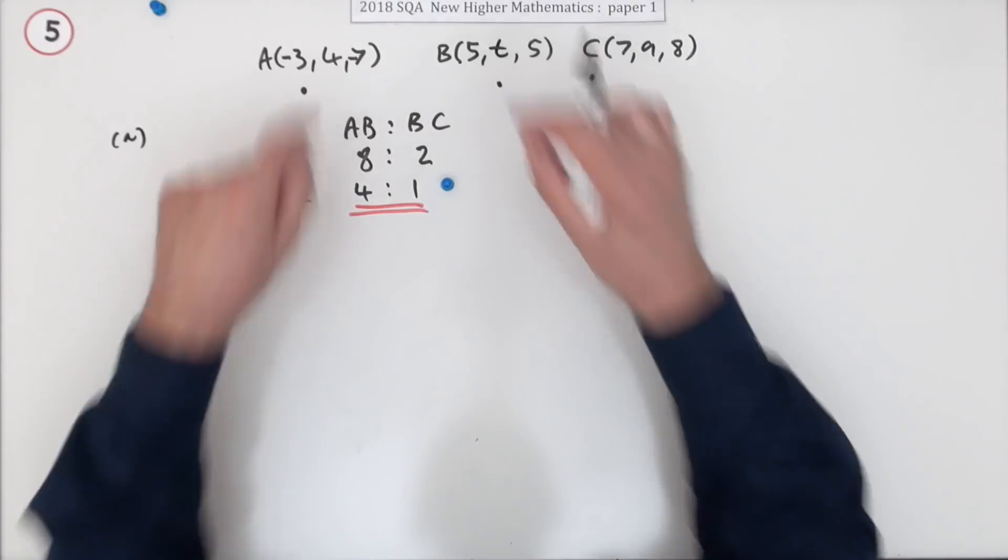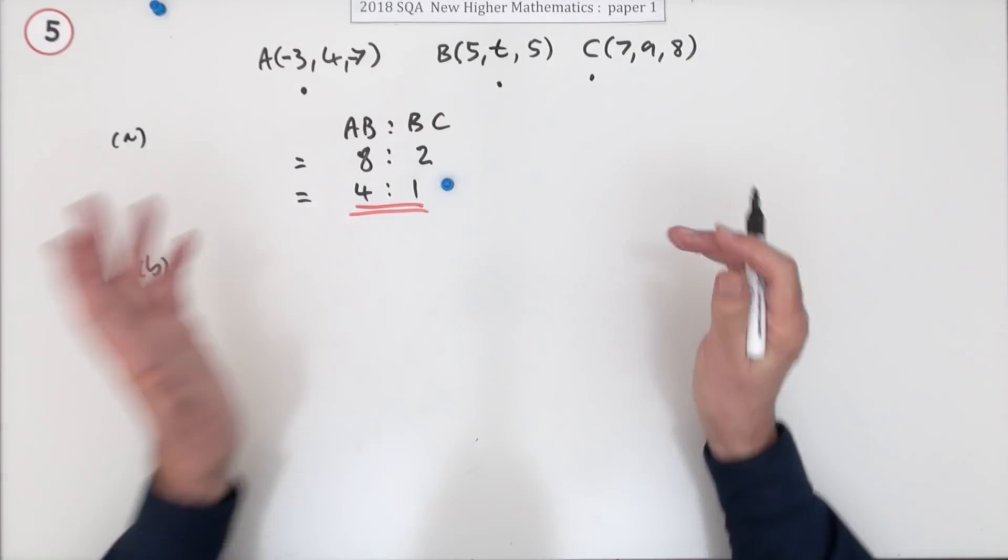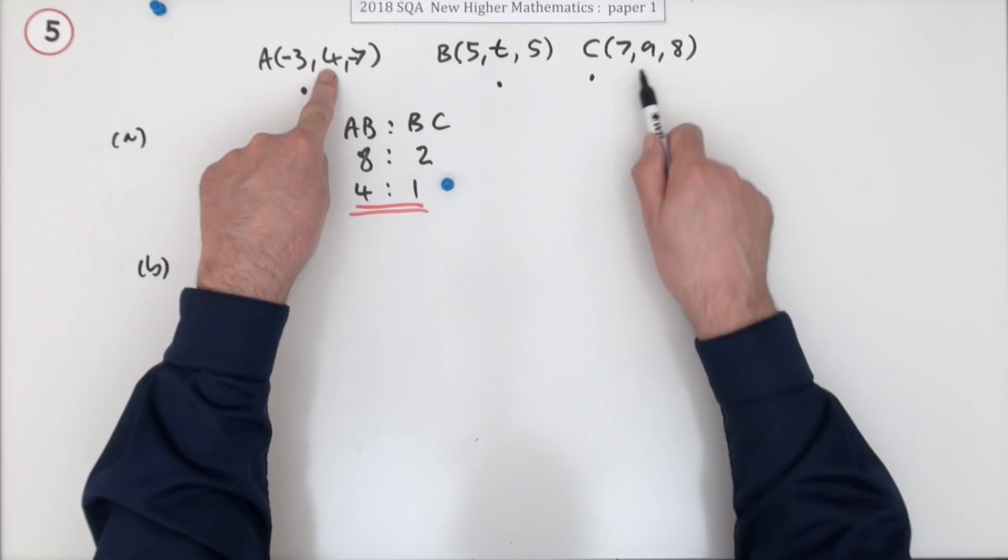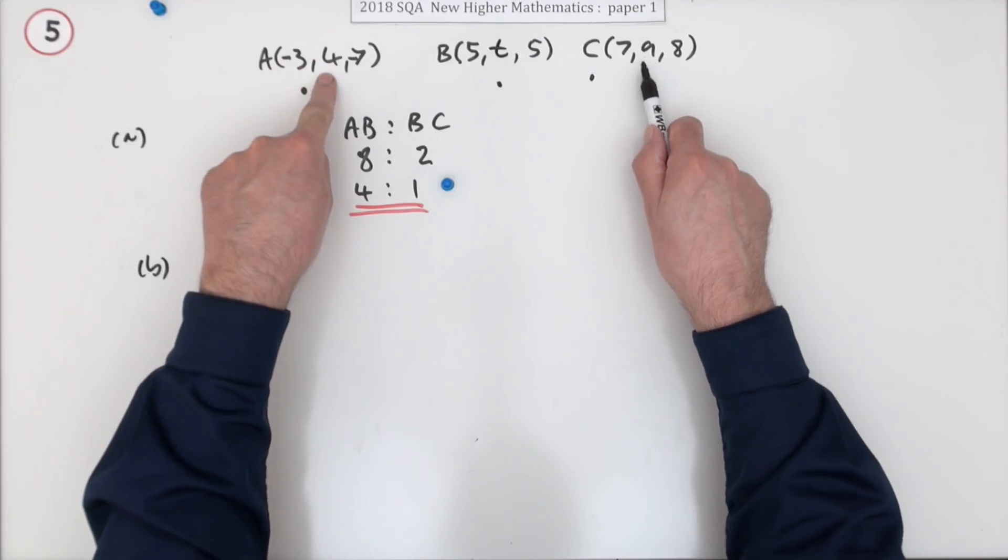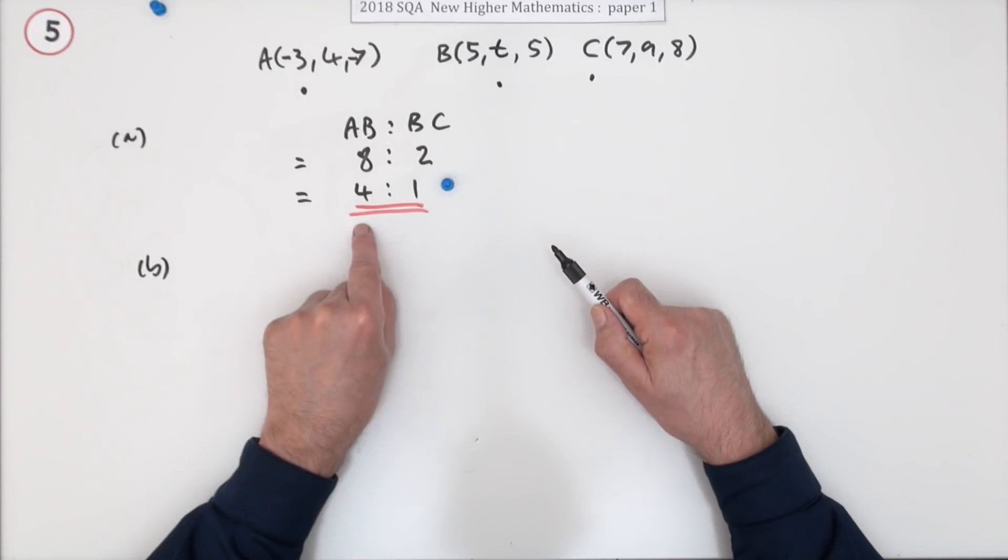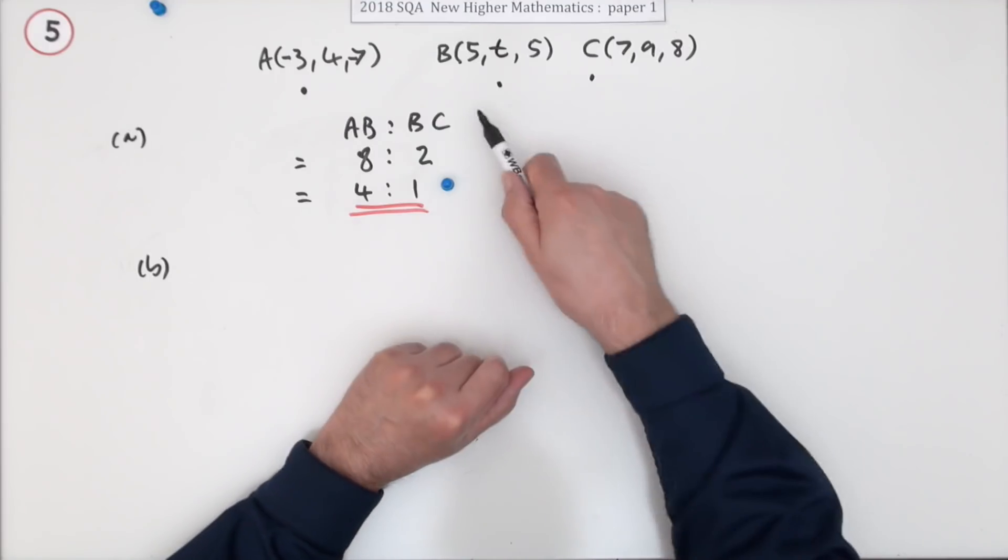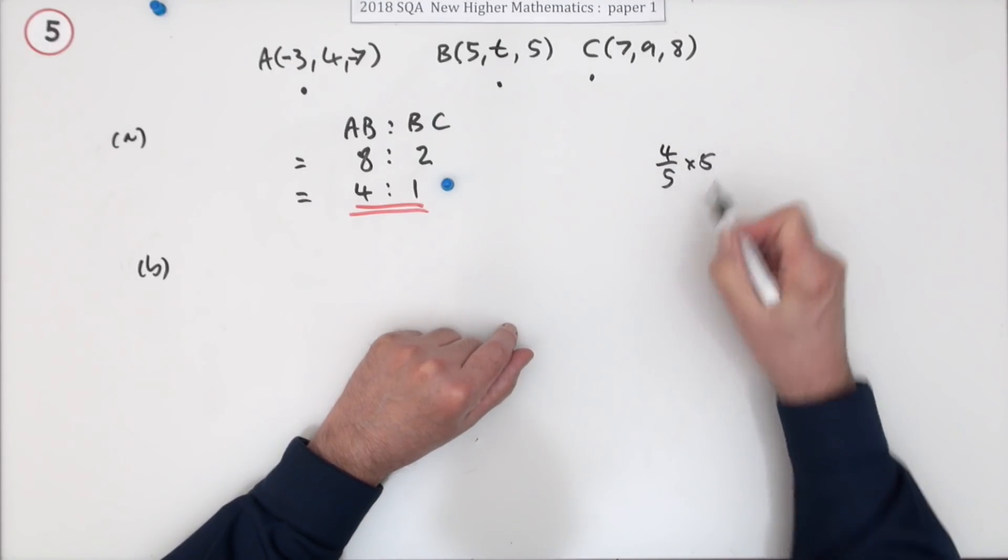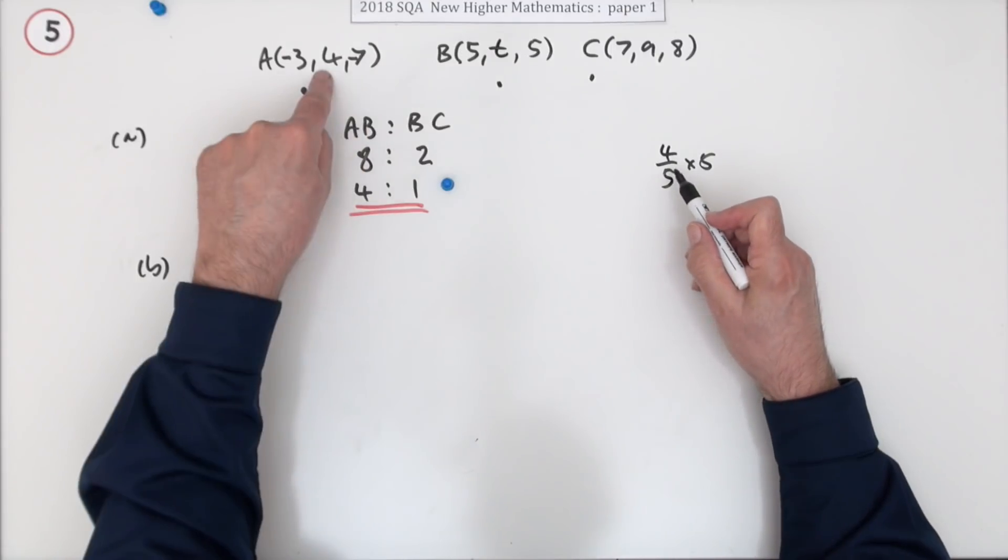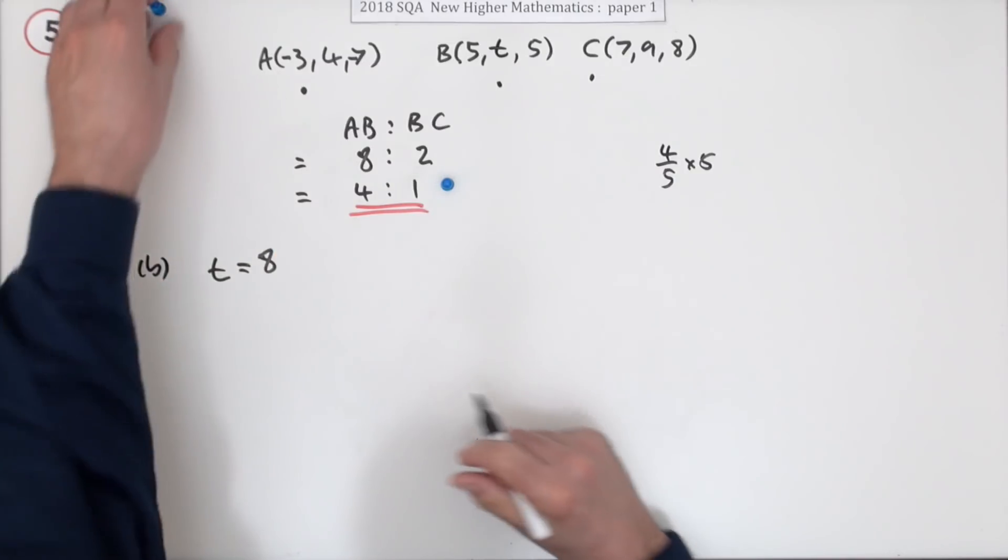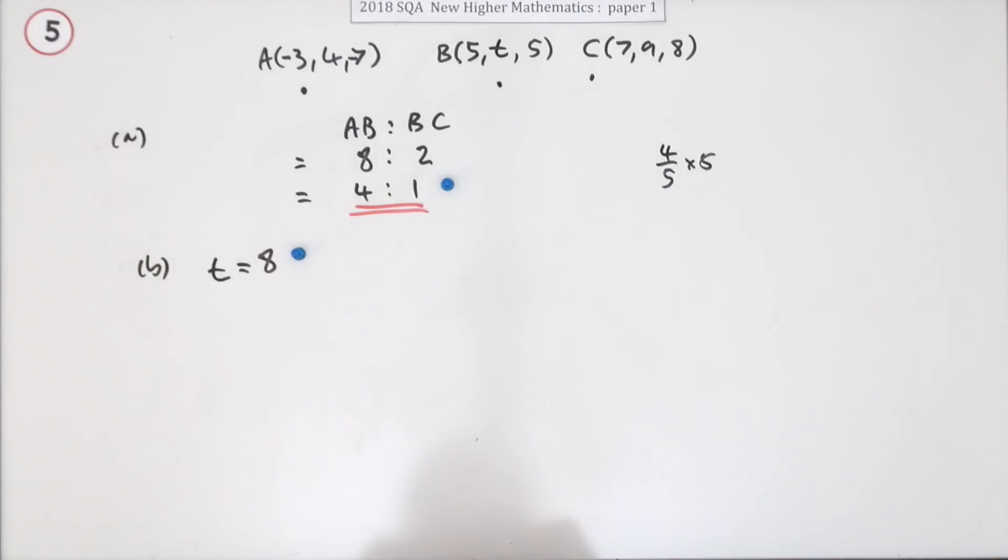For part B, it says state so you can just write T equals. You could set out an equation or just think about it. Going from A to C, you're going from four to nine, which is five steps. This splits it in the ratio of four to one, so it'll be four fifths of the five, which means four steps forward. So T should be eight, and that's correct.